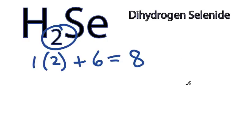So we know that hydrogen always goes on the outside of a Lewis structure, so we can put the Se right in the center, and let's just put the hydrogens on either side of that. Okay, so we have that.